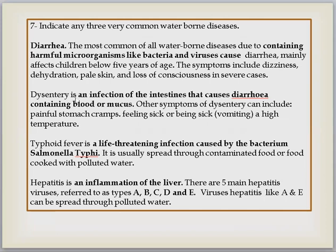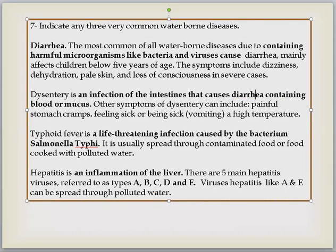Second is dysentery, which is very common in Pakistan. Dysentery is an infection of the intestines that causes diarrhea. This dysentery is also generally caused by diarrhea. Blood or mucus secretion starts happening. Symptoms include pain, stomach cramps, sick feeling, vomiting may occur, and temperature can be high.